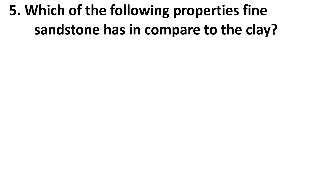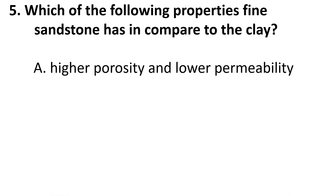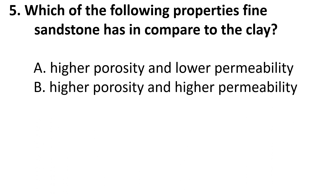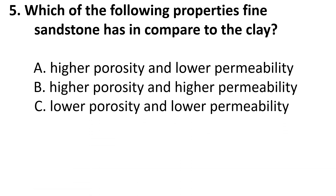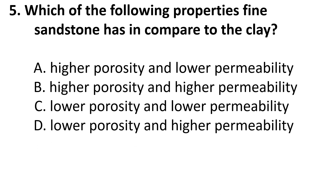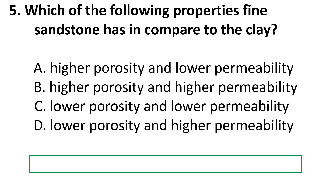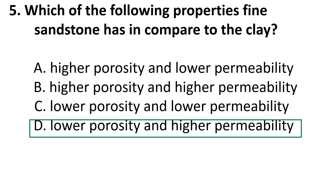Fifth question: Which of the following properties does fine sandstone have in comparison to clay? Choices are: A) Higher porosity and lower permeability, B) Higher porosity and higher permeability, C) Lower porosity and lower permeability, D) Lower porosity and higher permeability. Fine sandstone has lower porosity and higher permeability compared to clay, so the answer is D.